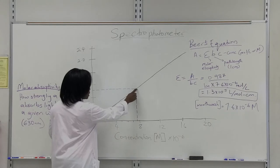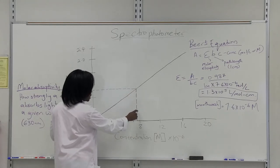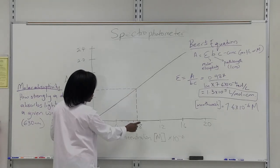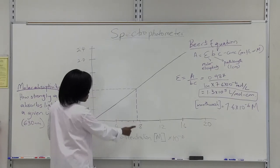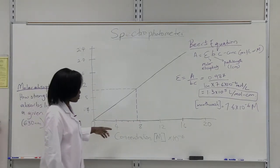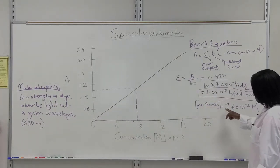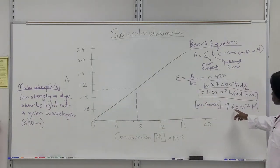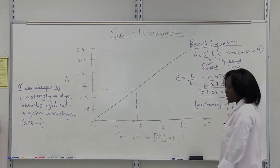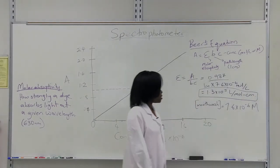And then you draw the line from the curve, these dotted lines from the curve, to meet your x-axis, which is going to give you the concentration. So therefore, reading from our graph, the concentration of the mouthwash is 7.6 times 10 to the minus 6 moles per liter or molar.